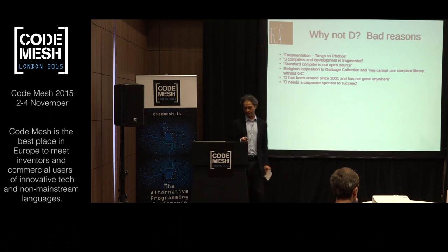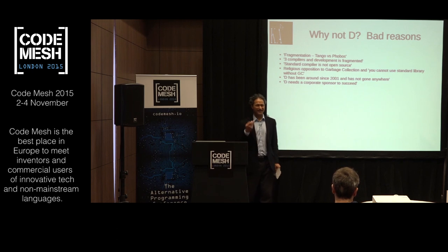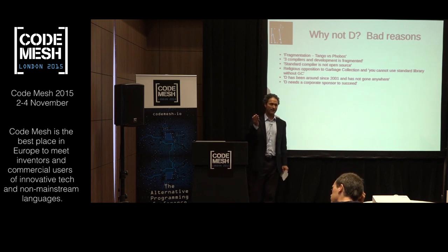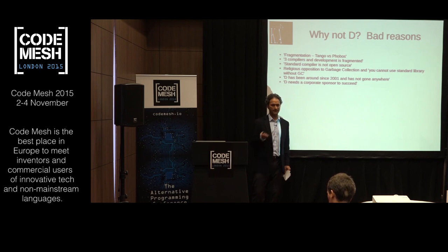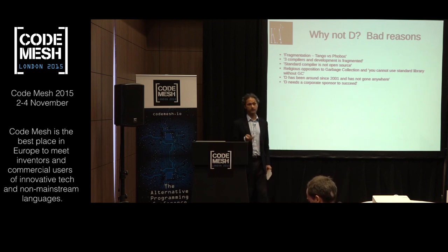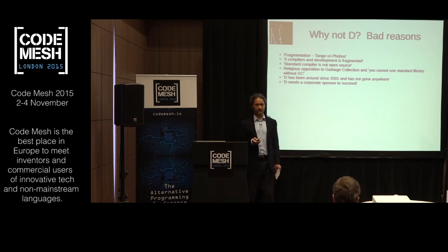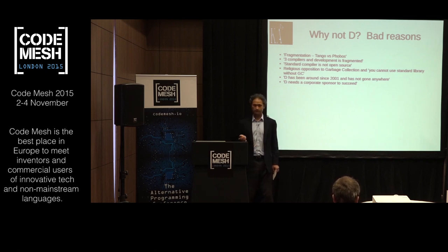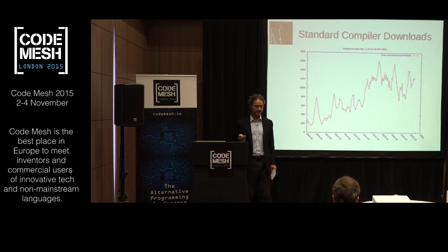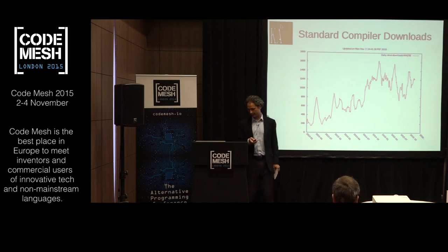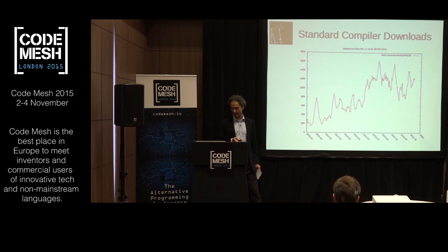D has been around since 2001 and hasn't gone anywhere. For whatever reason, it's not drawn as much press as some other languages, but what actually counts is whether people are using it. Here are some statistics on daily compiler downloads since 2013 — it's volatile and tends to go down over the summer, but it's increased from around 200 downloads a day to about 1,300.